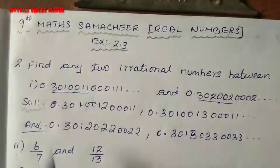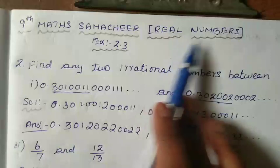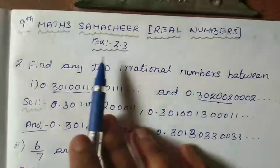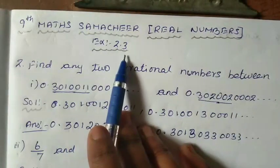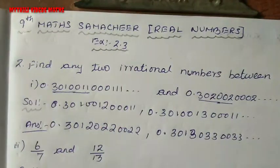Hi students, this is 9th Maths. Samacheer real numbers, exercise 2.3. There is a 2nd and 3rd subdivision we have to see. The 3rd subdivision is: find the rational numbers between root 2 and root 3. This is the rational numbers we have to find.